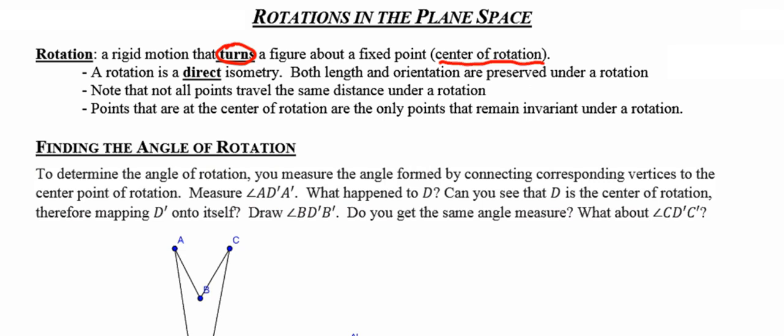Now think about a sweatshirt. If I take a sweatshirt that says Sutherland across the front and I turn it or rotate it, the Sutherland doesn't change the orientation. It's not backwards. So that tells me that the rotation is a direct isometry, meaning that both the distances are preserved as well as the orientation.